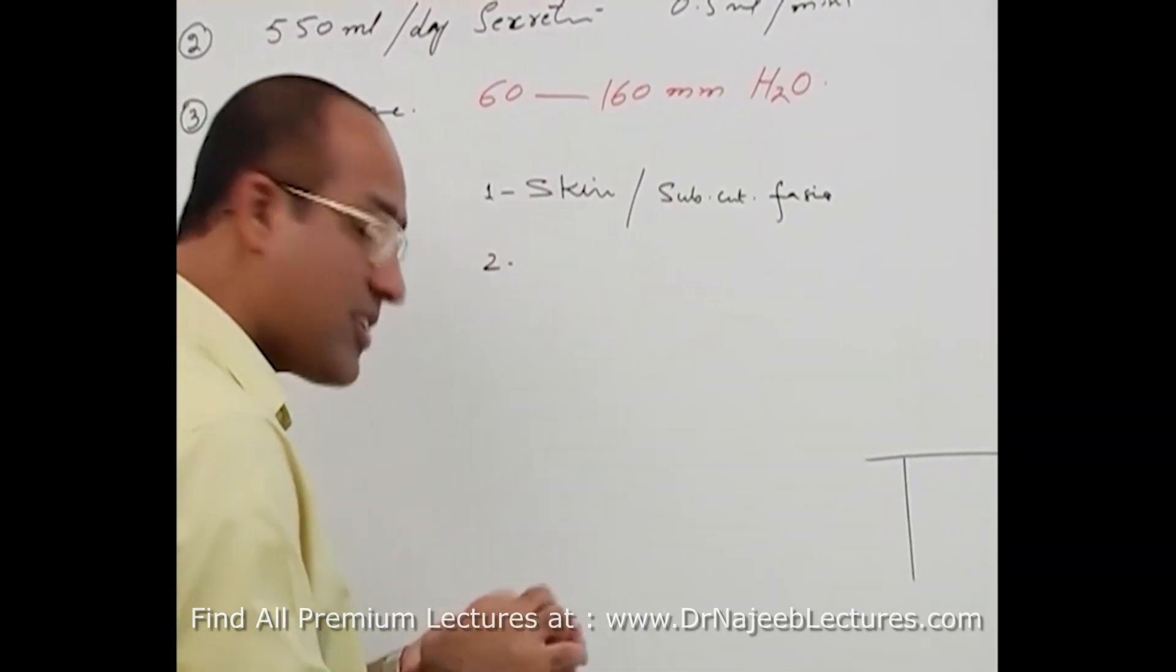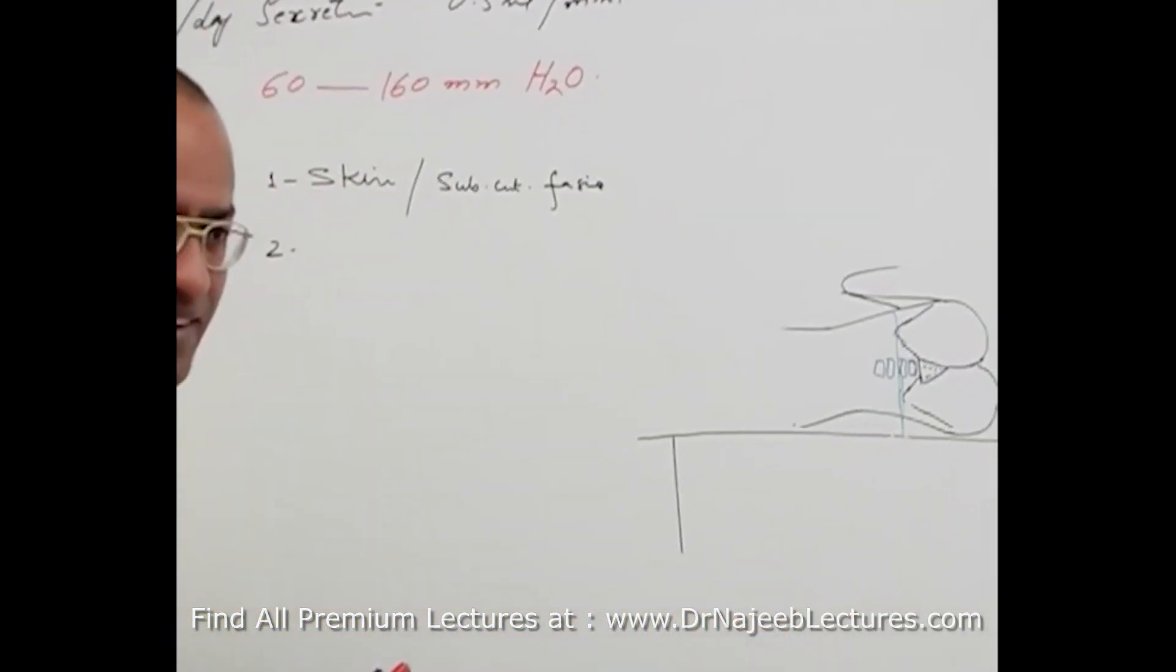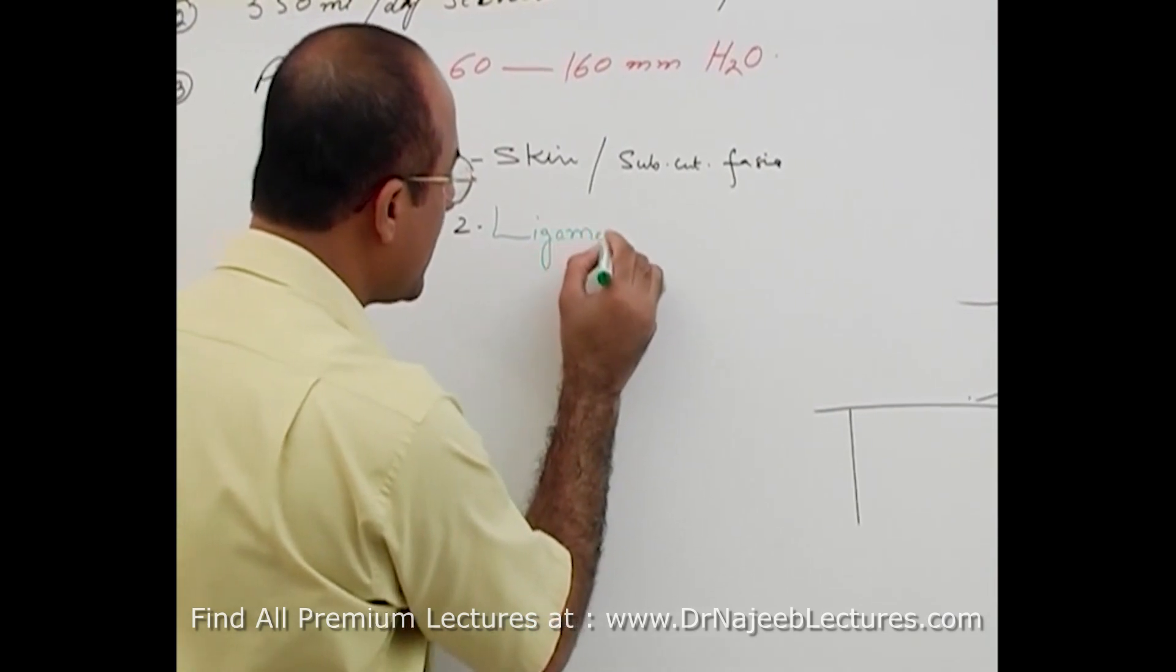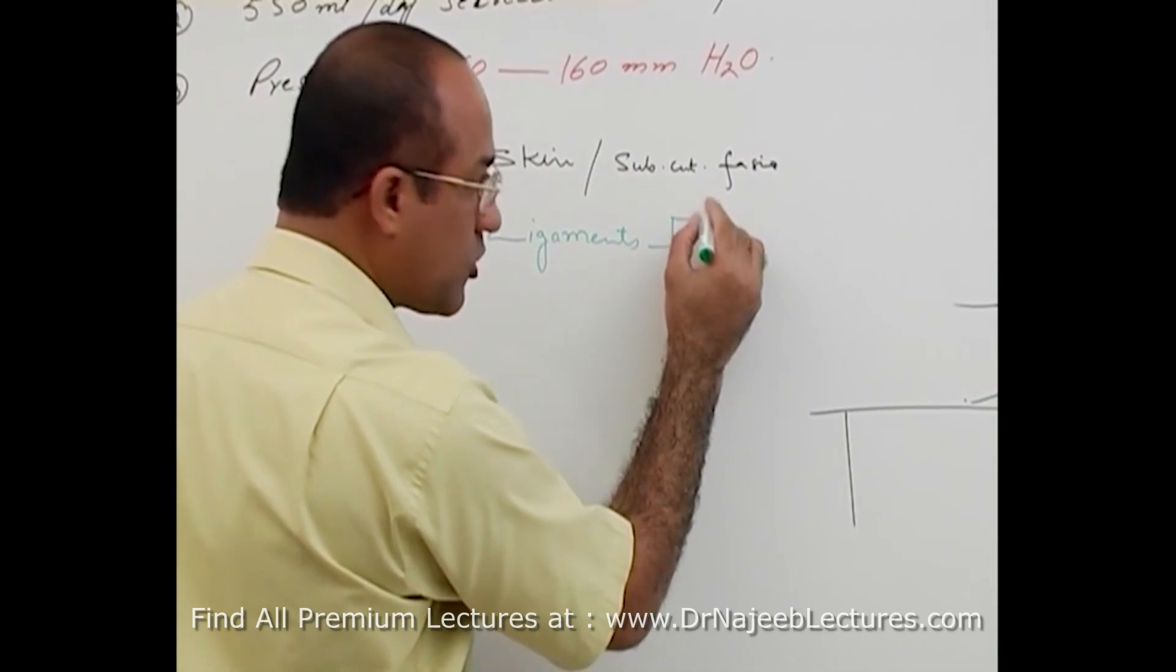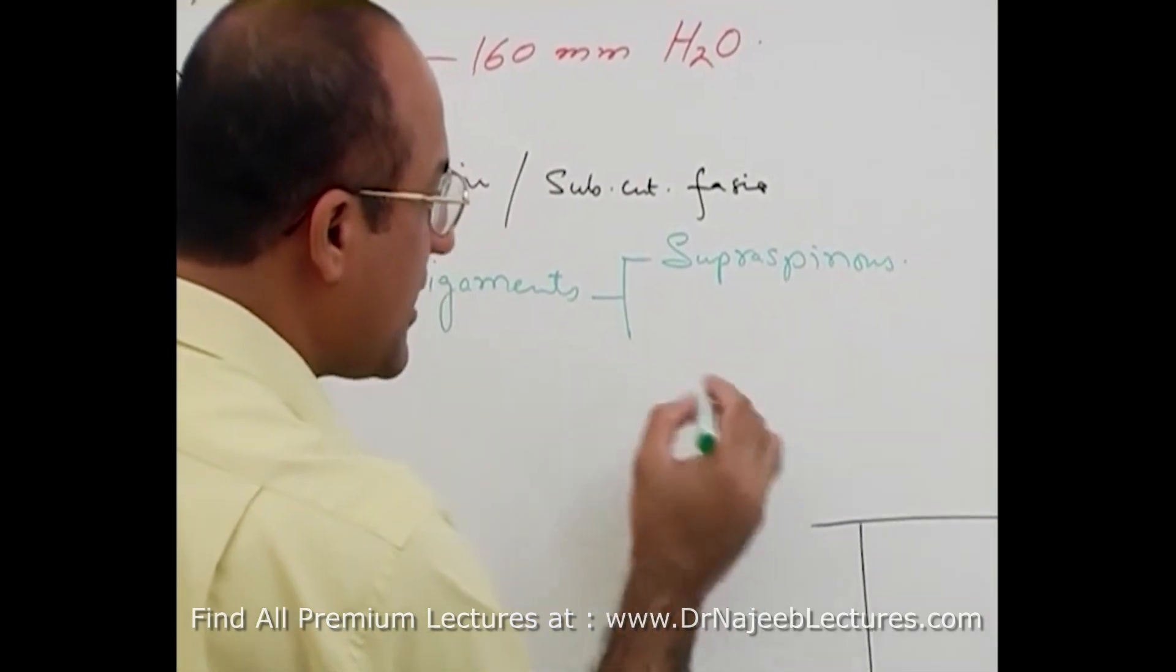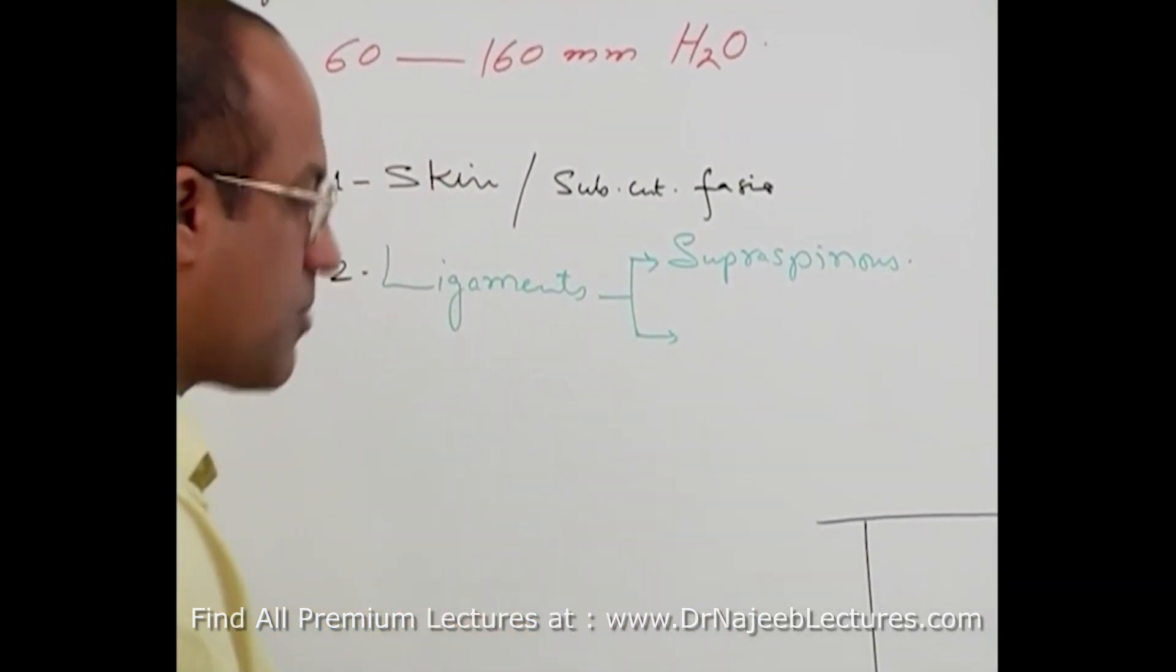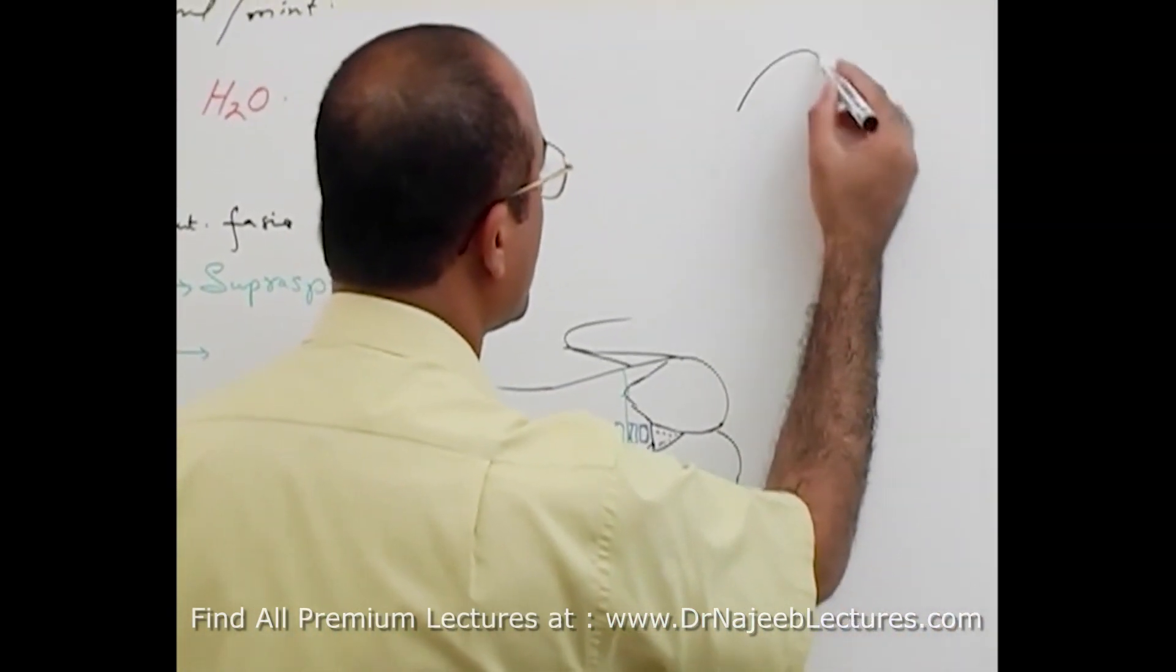Then there are ligaments. You know, there are spine and spines are held together by ligaments. Then ligaments will be which ligaments? Supraspinous ligament. Spinous ligament. Then there are interspinous. Should I make really a diagram proper so you understand how these ligaments are there? Okay.